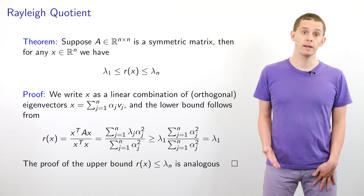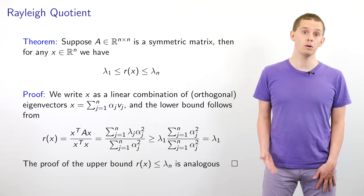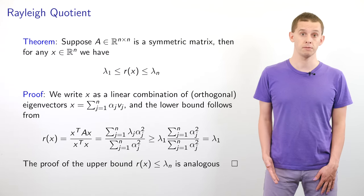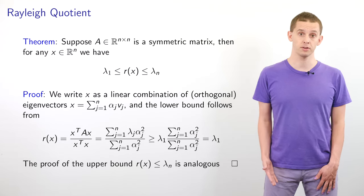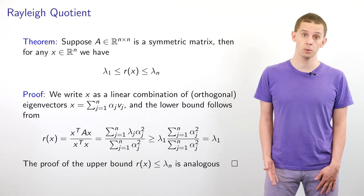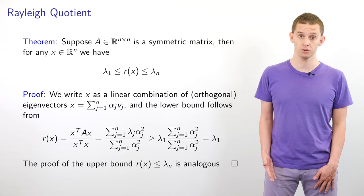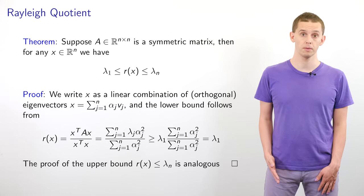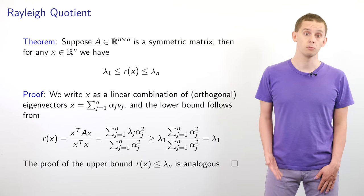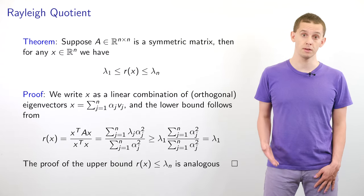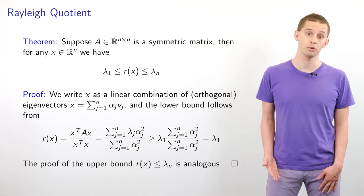We can get an inequality by replacing all lambda j with lambda 1. Since lambda 1 is the smallest eigenvalue, the expression must be greater than or equal to lambda 1 times the sum of alpha j squared divided by the sum of alpha j squared, which simplifies to lambda 1. So R(x) is greater than or equal to lambda 1. Similarly, replacing lambda j with lambda n establishes the other bound that R(x) is less than or equal to lambda n.